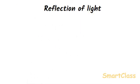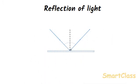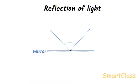Reflection of light: If we throw a tennis ball at a wall, the ball bounces back. Similarly, when light falls on the surface of an object like a mirror, the object sends the light back. The process of sending back the light rays which fall on the surface of an object is called reflection of light.